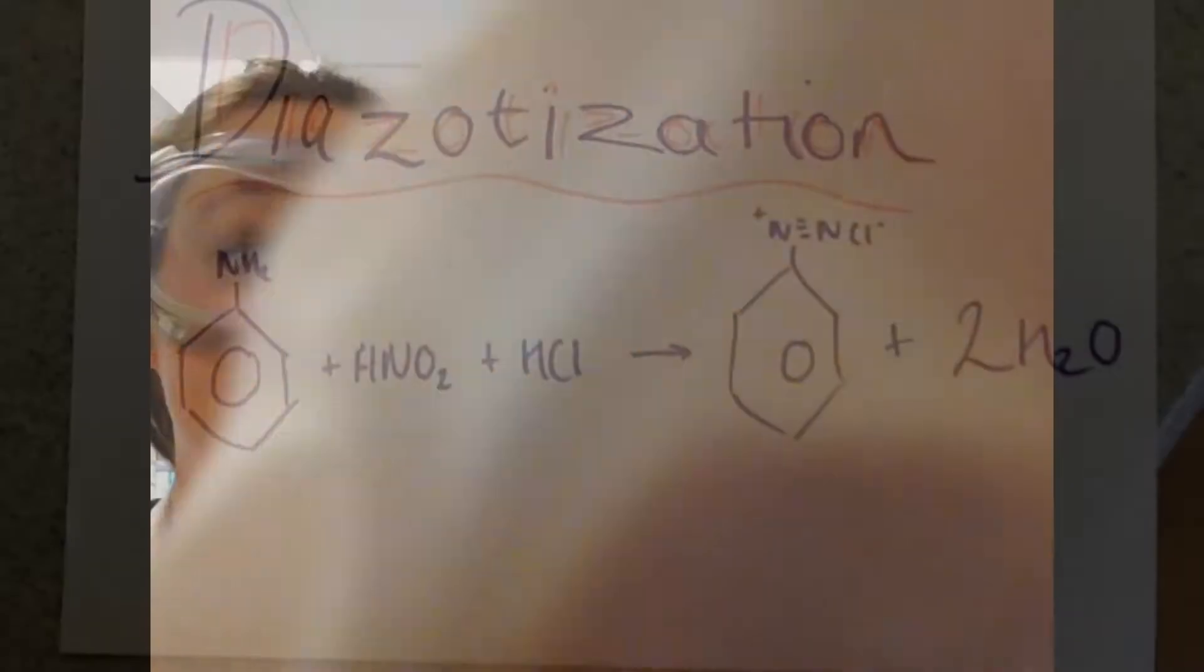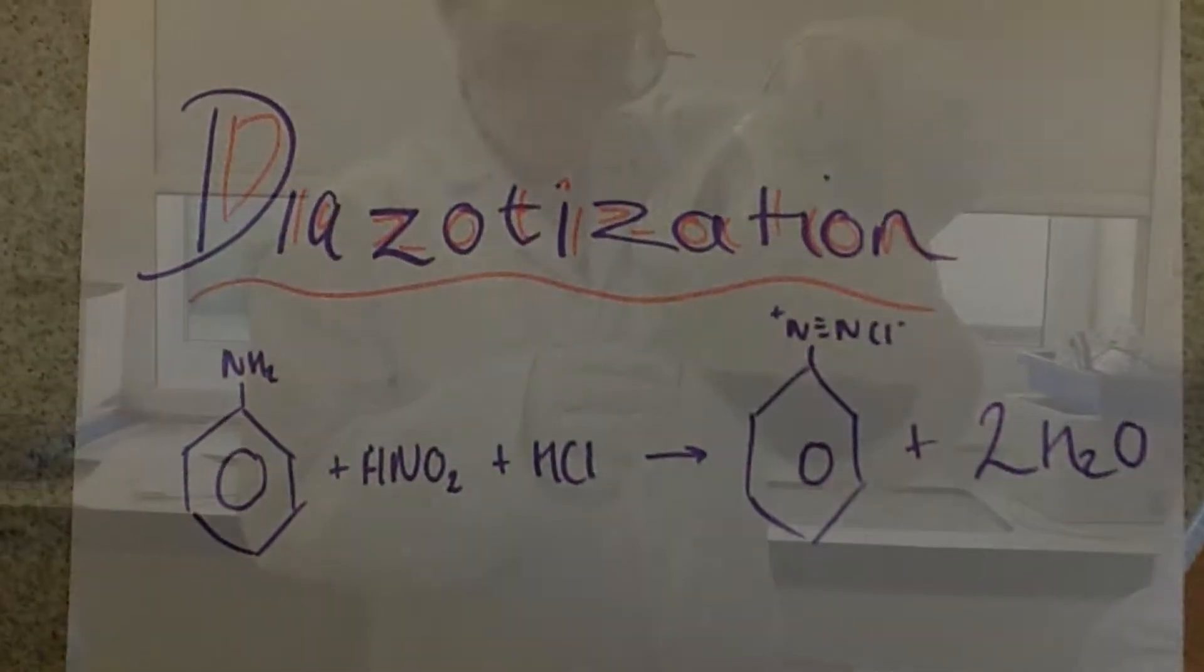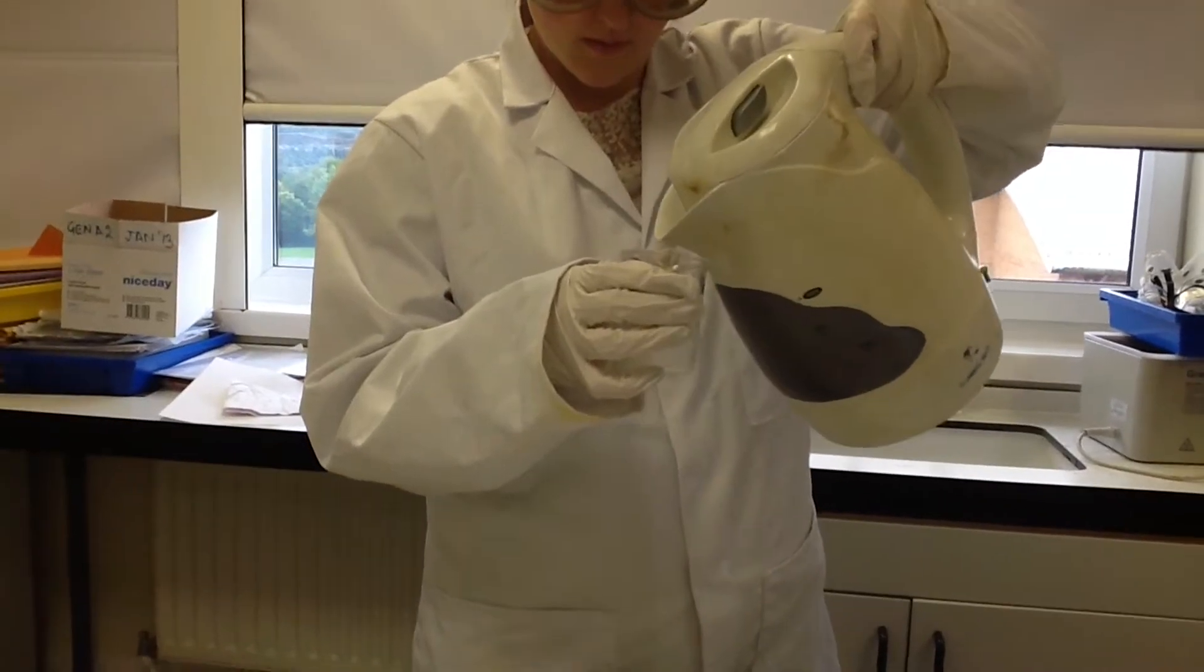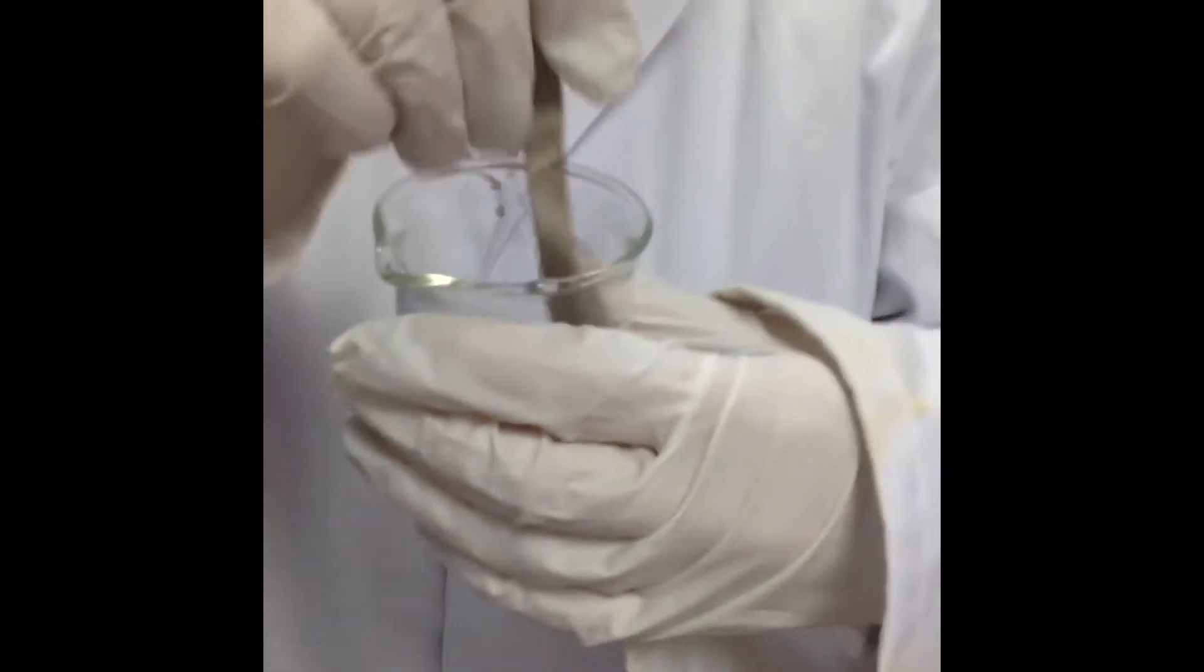Preparation of an azo dye. We are now pouring hot water into sodium carbonate and dissolving it. The sodium carbonate has dissolved.